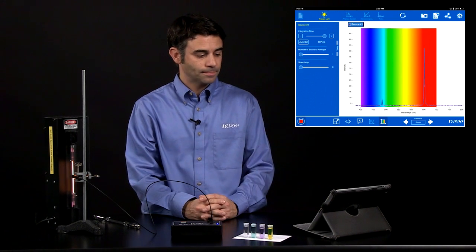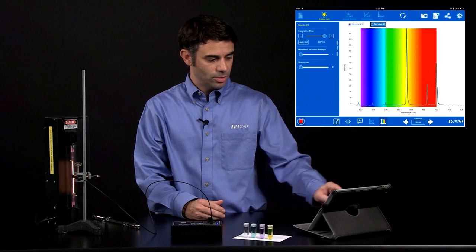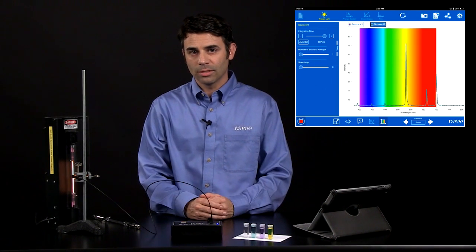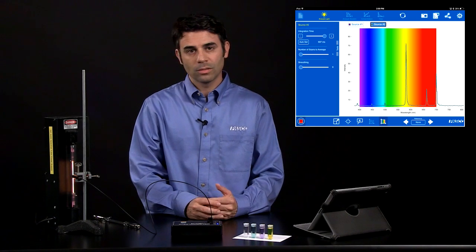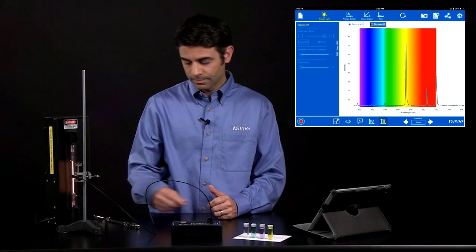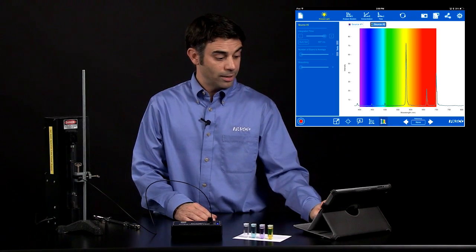I'm going to replace my hydrogen spectral tube with helium. Both are very common, quick activities for physics and chemistry classes. I'm going to hit start again. Integration time should be pretty good based on the hydrogen. Now we have a different set of peaks based on the different emission lines for helium. I'm going to stop.